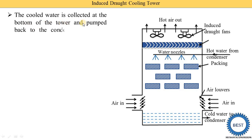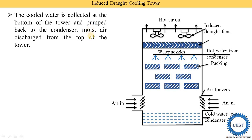The cool water collected at the bottom of the tower is pumped back to the condenser. Moist air is discharged from the top of the tower. The cooling water collected at the bottom is again supplied to the condenser.